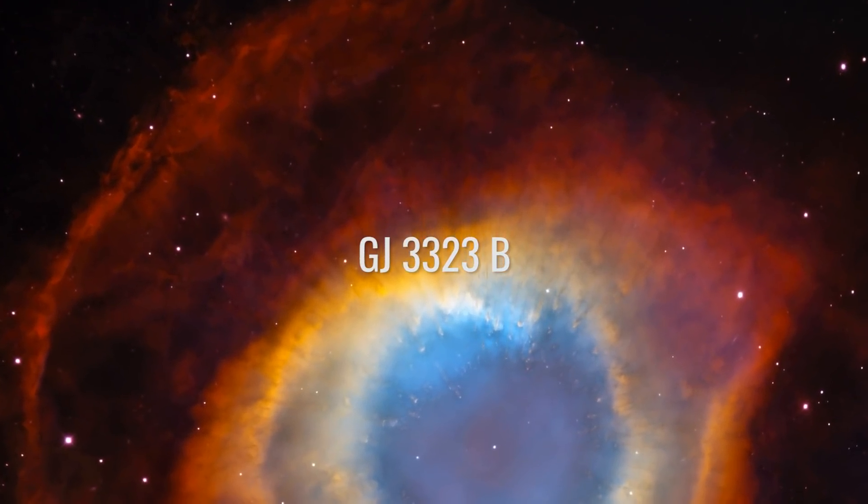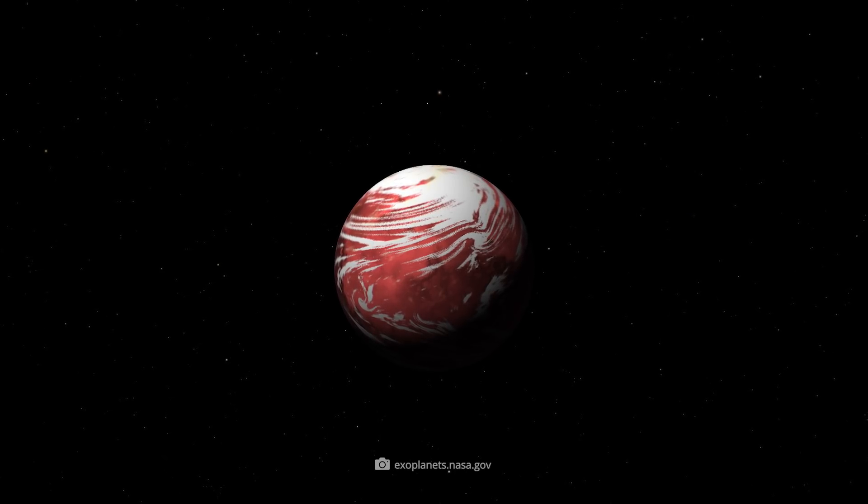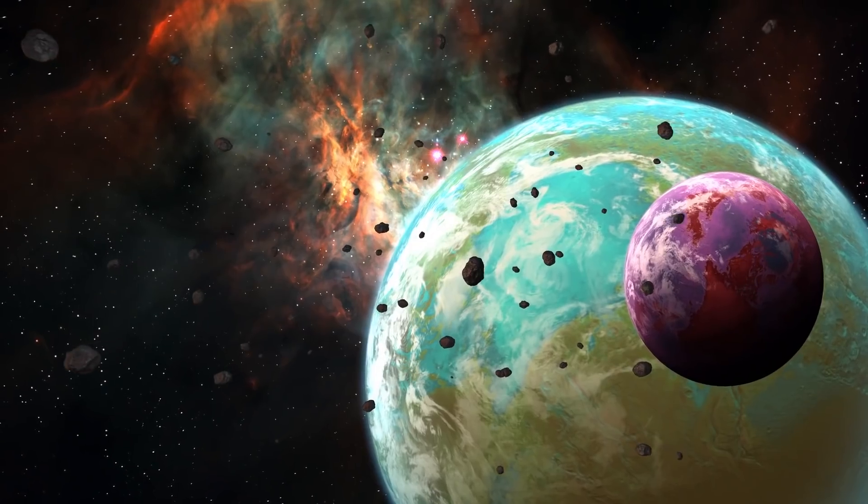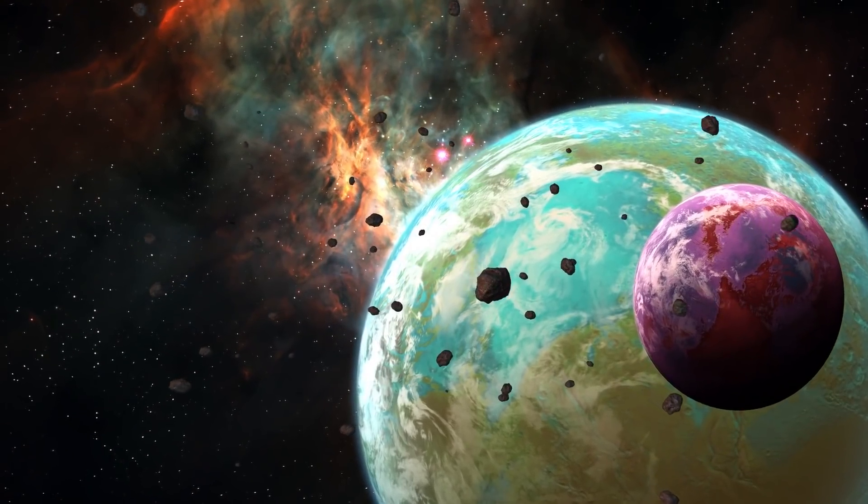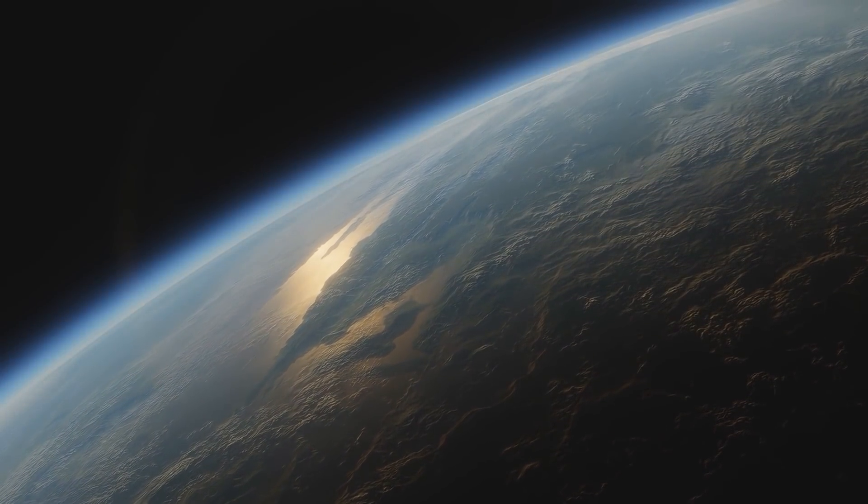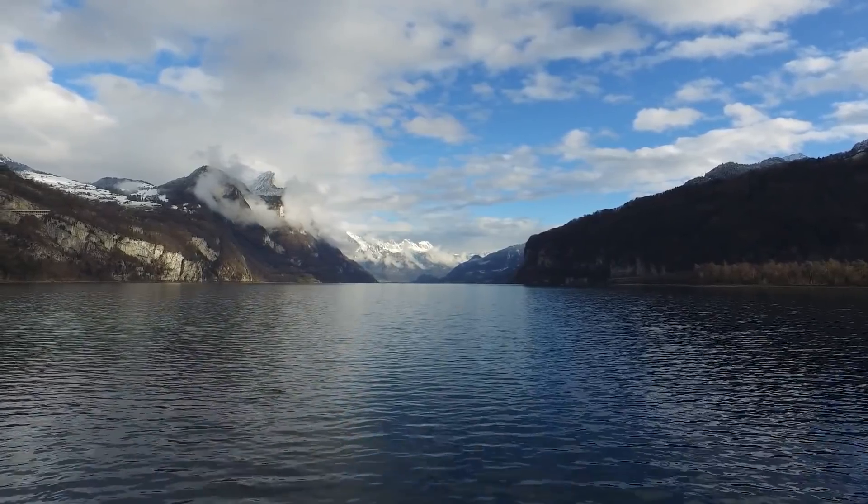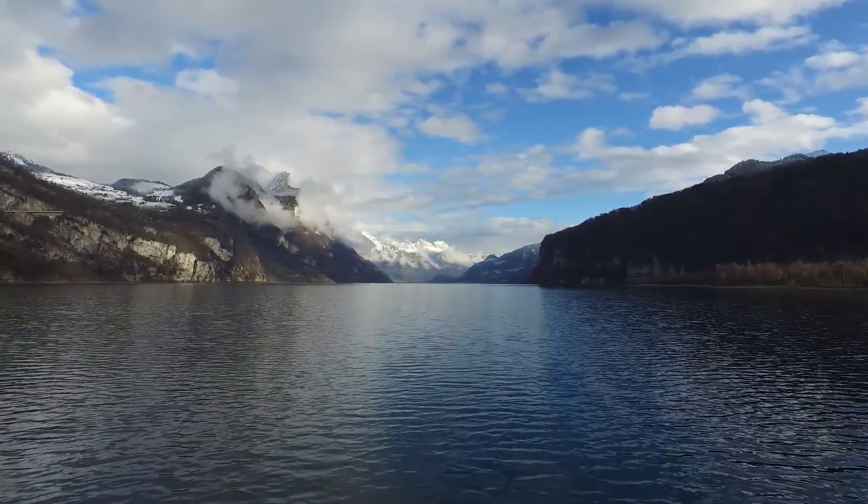GJ-3323b. Planets like GJ-3323b and all the others in this video are also called super-Earths in the scientific community. The term has become established for all those exoplanets that are similar to Earth. Some of these planets could be even more habitable and offer even better living conditions than our home planet.